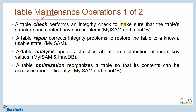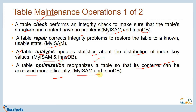A table check performs an integrity check to make sure the table structure and content have no problems — applicable for both MyISAM and InnoDB. Table repair corrects integrity problems to restore the table to a known usable state — applicable only for MyISAM, not InnoDB. Table analyze updates statistics about the distribution of index key values — applicable for both — which increases performance and improves the speed of table access.